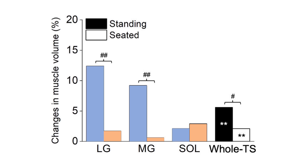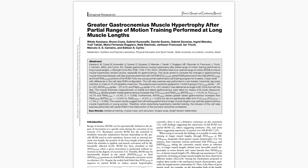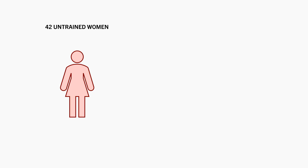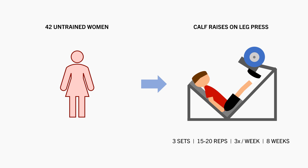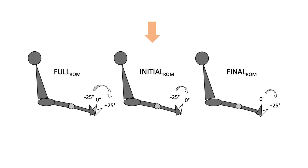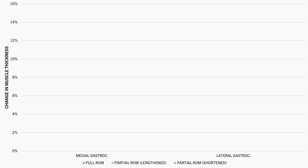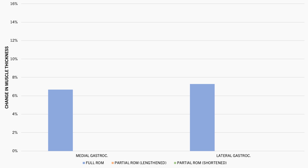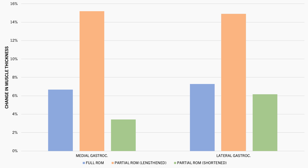And when it comes to range of motion, we also see a similar phenomenon. This study compared the effects of training through different ranges of motion on muscle growth of the calves. 42 untrained women performed calf raises on a leg press machine for 3 sets of 15-20 reps, with all sets taken to failure 3 times per week for 8 weeks. One group performed a standard full range of motion, another group performed partial reps in the initial range only, which is where the calf muscles are most lengthened, and the third group performed partials in the final range of motion only, which is where the calf muscles are most shortened. After 8 weeks, the full range of motion resulted in significant increases in muscle thickness of both gastrocnemius heads. However, the partials performed in the lengthened position were more effective, while the partials in the shortened position were less effective.